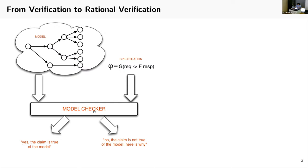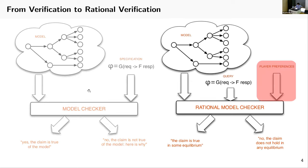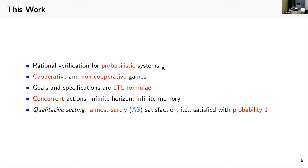This gives rise to the notion of rational verification. In classical verification, we have a model checker that requires input: the model and the specification. But in rational verification, a rational model checker requires another input—player preferences—that will return yes if the claim is true in some equilibrium, otherwise it returns no. In this work, we consider rational verification for probabilistic systems in both cooperative and non-cooperative settings. Goals and specifications are given by LTL formulae. Games have concurrent actions, infinite horizon, and infinite memory. We consider the cooperative setting with almost surely satisfaction, satisfied with probability one.